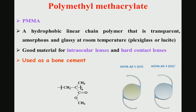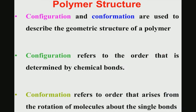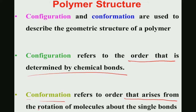Poly methyl methacrylate (PMMA) has two methyl groups and another functional group attached, and is used as bone cement. Other applications of PMMA include intraocular lenses and hard contact lenses. Regarding polymer structure, two important terms are configuration and conformation. Configuration refers to order determined by chemical bonds, whereas conformation refers to order arising from the rotation of molecules about single bonds — these two terms are fundamentally different and should not be used interchangeably.